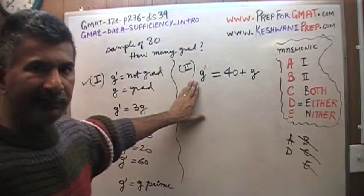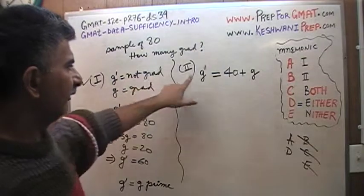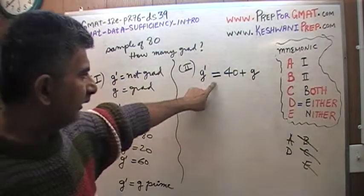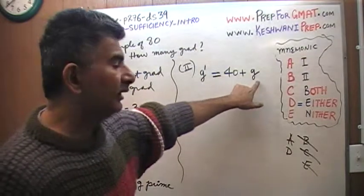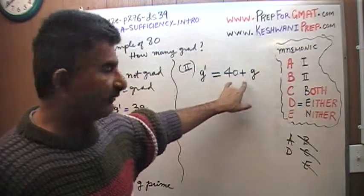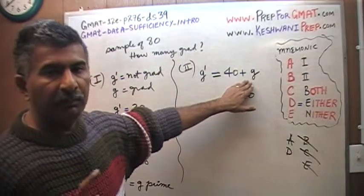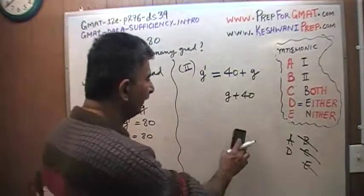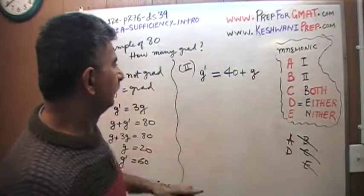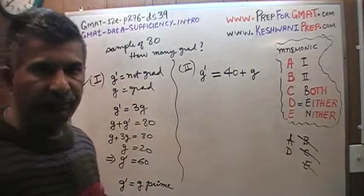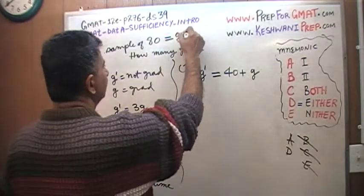A mathematical equation is like a sentence written in mathematical language. G-prime means people who are not graduates, so this tells us: the number of people who are not college graduates is 40 more than the number of people who are college graduates. Since we know the sample is 80, that means 80 must equal G plus G-prime, so G' = 80 − G.